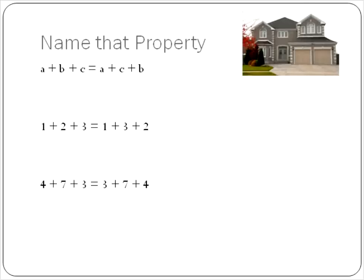And our last property, a plus b plus c, is a plus c plus b. In other words, 1, 2, 3 could be 1, 3, 2. Or it could be 1, 3, 2, 1. When you're adding them together, you can commute them to different places. This is the commutative property.